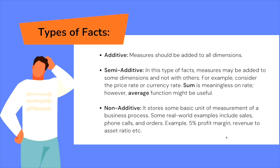There are basically three types of facts: additive, semi-additive, and non-additive. Not all functions like sum, max, mean, average, or percentage can be applied to all facts. Additive facts: measures can be added across all dimensions - you can apply max, mean, percentage, average, sum, etc. Semi-additive facts: measures may be added to some dimensions but not others - for example, sum is meaningless on a currency rate, but average might be useful. Non-additive facts: stores basic units of measurement of a business process - examples include 5% profit margin or revenue-to-asset ratio.